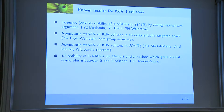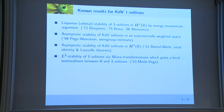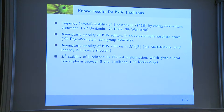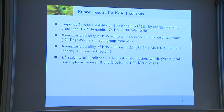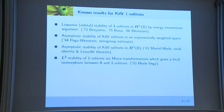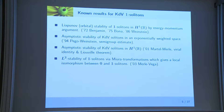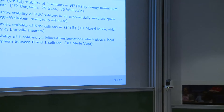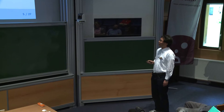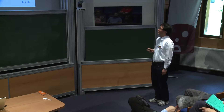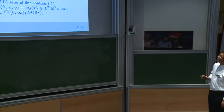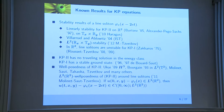L2 stability of H1 solitons was proved by Merle and Vega in 2003. What they did was use a Miura-type transformation to connect soliton solutions with kink solutions of the defocusing modified KDV equation, giving a local isomorphism in L2 between a neighborhood of zero and a neighborhood of a one-soliton. This argument cannot be applied directly to the stability of line solitons in L2 on R2, but the idea is still useful to investigate linear stability of line solitons. The next slide covers known results for KP equations.